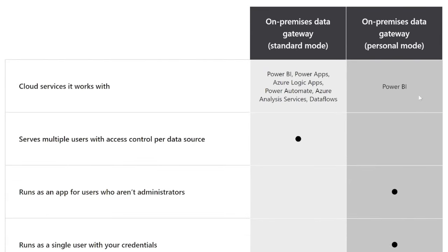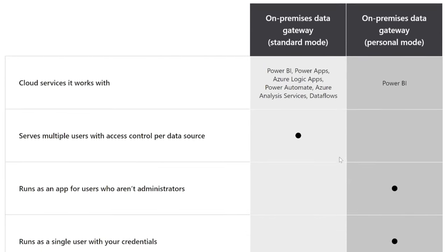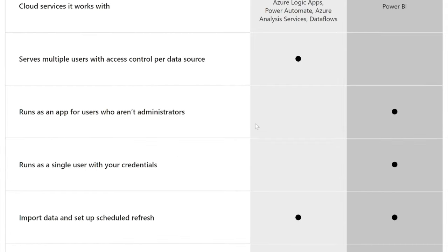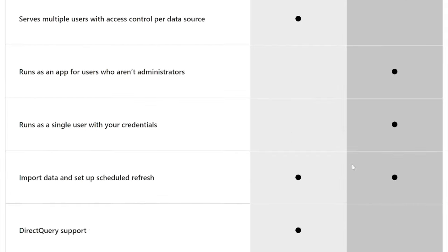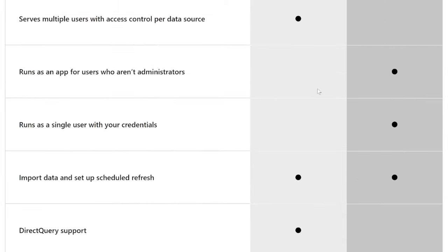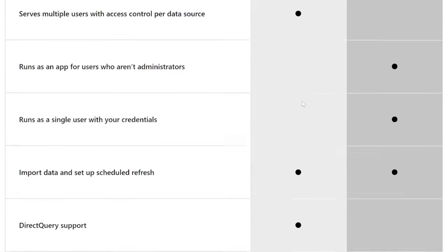Standard mode serves multiple users. In personal mode, it's only a single user. Personal mode runs as an app for users who are not administrators, so every user can use it without being an administrator. If you import data and set up a scheduled refresh, you can do that in both modes.